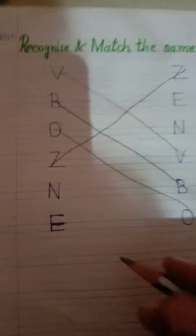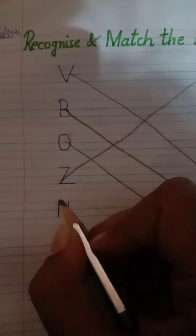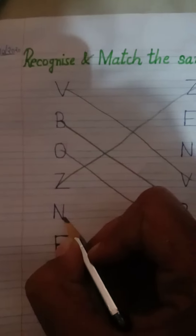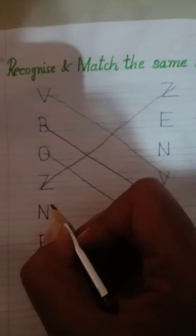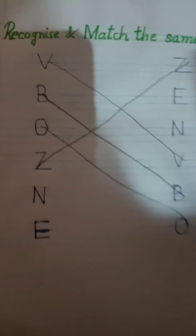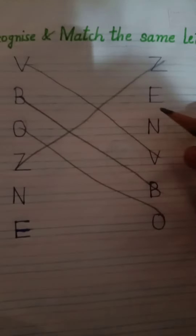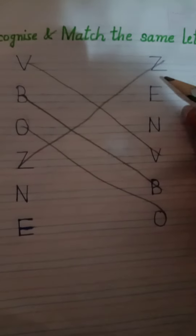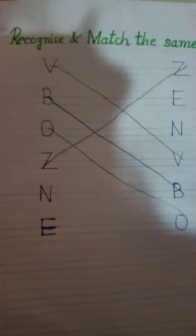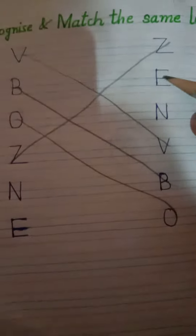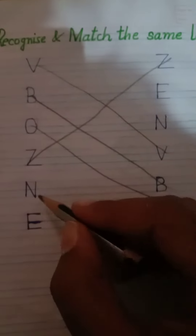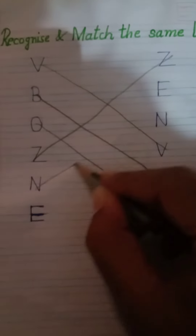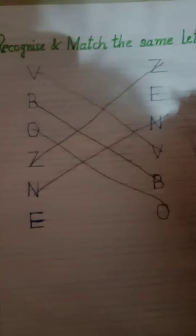One standing line, one slanting line, and one more standing line — it's a letter N. Now search, where is the letter N? Yes, it's a letter N! So match the N with N.